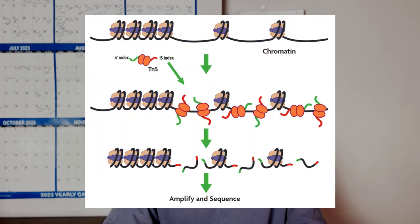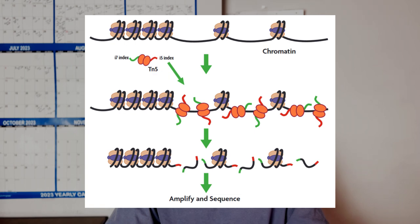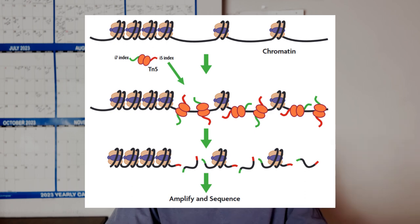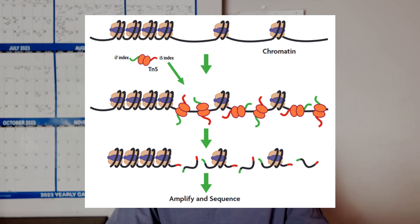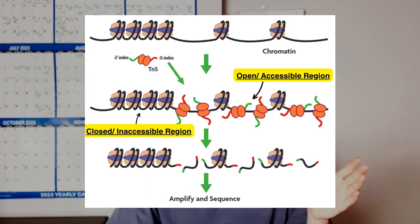This is where ATAC-seq comes in. ATAC-seq begins by sending in a unique enzyme called TN5 transposase. Think of this enzyme as a scout or an explorer — it's designed to seek out and cut the DNA. But here's the catch: it can only make cuts in regions that are open and accessible. So wherever this enzyme manages to cut, it's a clear indication that that part of the chromatin is in an open state.